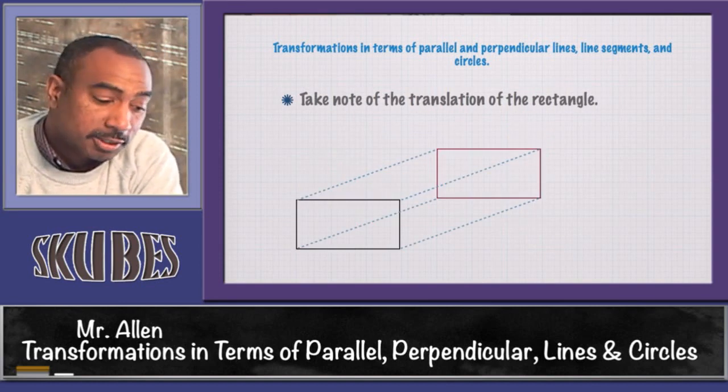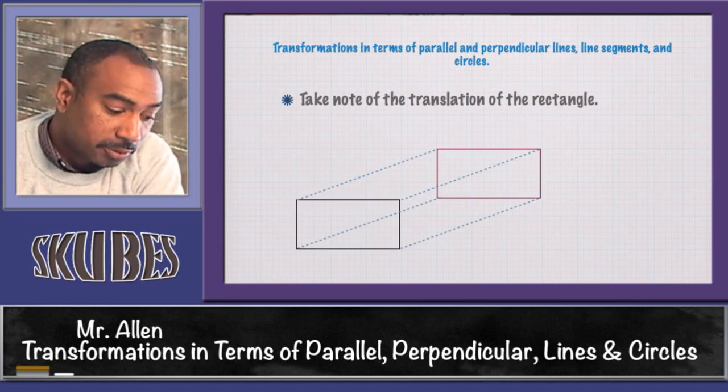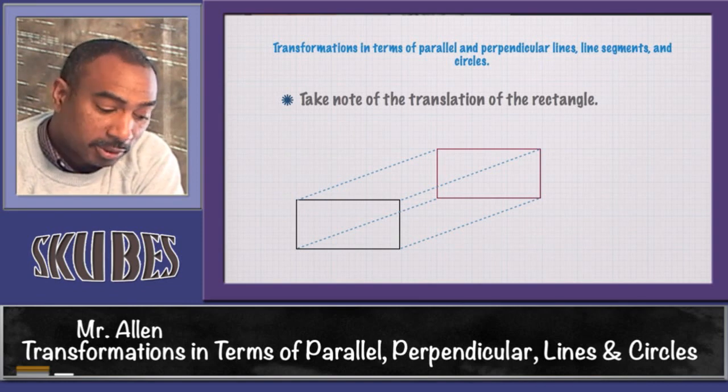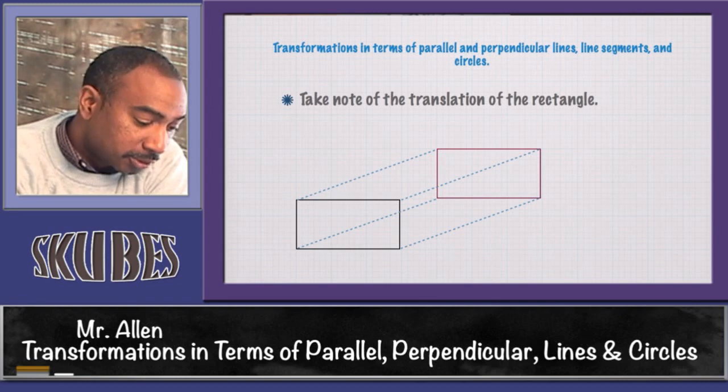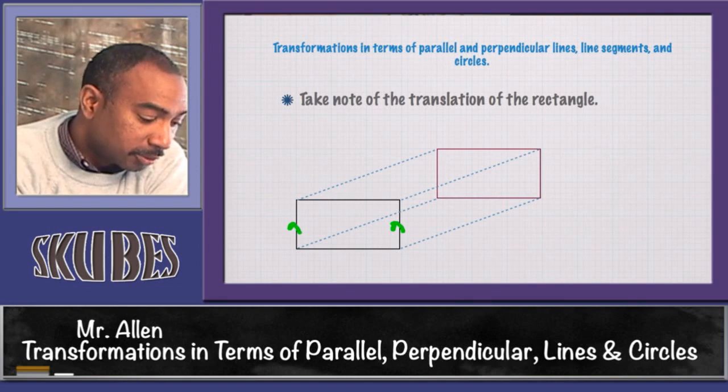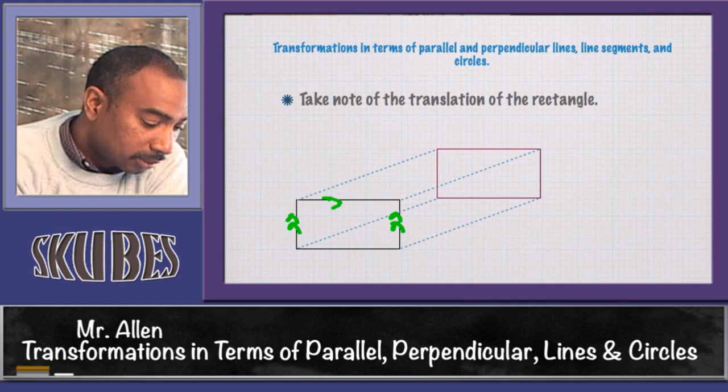If you look at the translation, all it's doing is moving the figure from one location to the next. So again, it's still going to preserve the properties of a rectangle—opposite sides are still going to be congruent as well as parallel, and the angles are going to be the same.